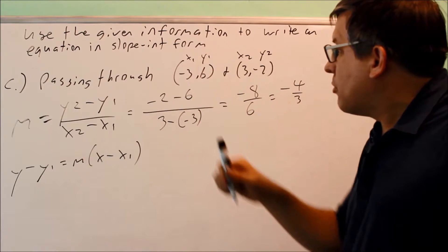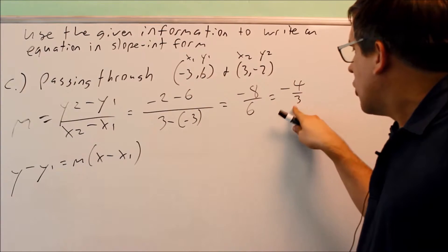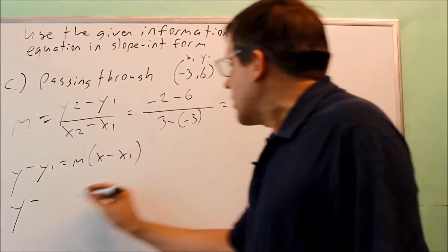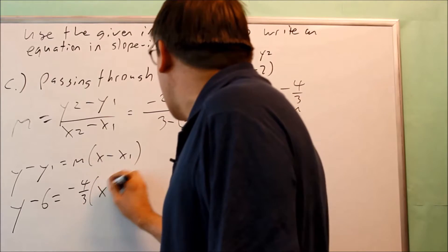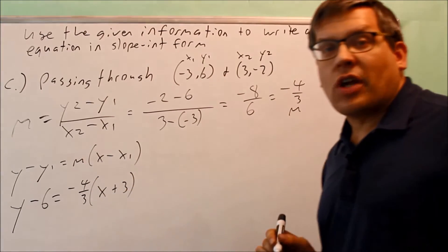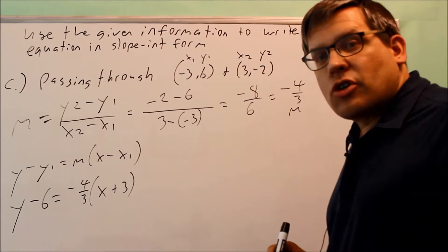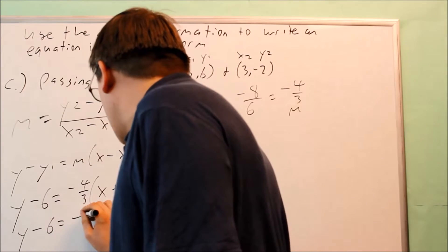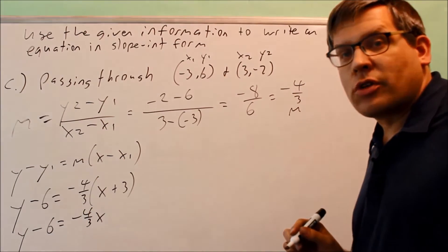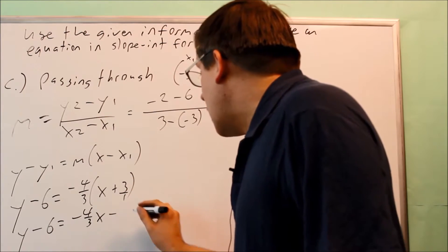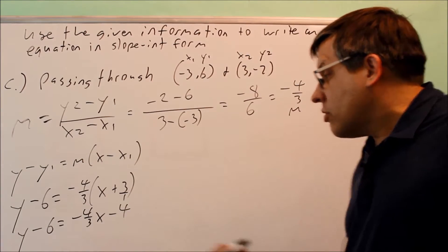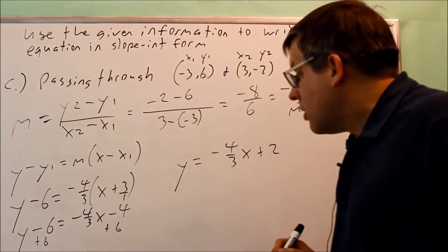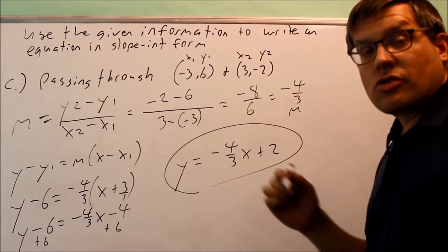Plugging into the point-slope formula: y minus y1 gives y minus 6, equals negative 4 thirds times x minus negative 3, which becomes x plus 3 due to the double negative. That's the point-slope form. To convert to slope-intercept, we solve for y: distribute to get negative 4 thirds times x, and negative 4 thirds times 3 — the 3's cancel — giving negative 4. Then we add 6 to both sides and get y equals negative 4 thirds x plus 2. That is the correct slope-intercept form.